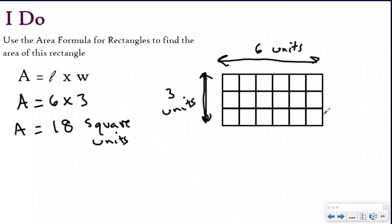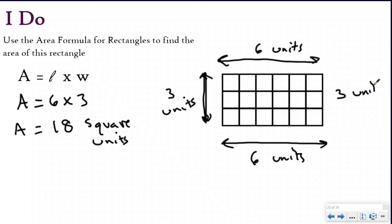Before we do our 'we do' problem, let's talk about a common misconception. Sometimes people label all four sides and then want to do six times three times six times three — that doesn't make sense. If you conceptually understand that finding area is really finding the answer to an array question, you can't do six groups of three times three groups of six and expect the correct answer. You only need one length and one width — those two factors are all you need to find the area of a rectangle.